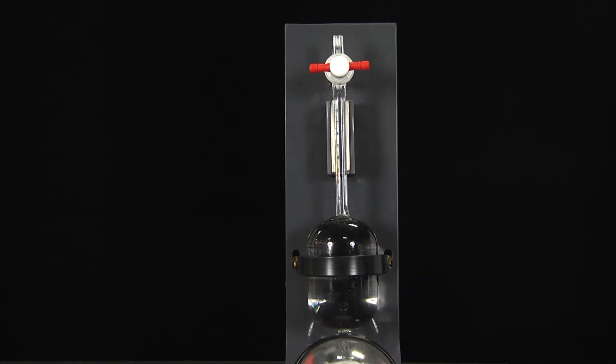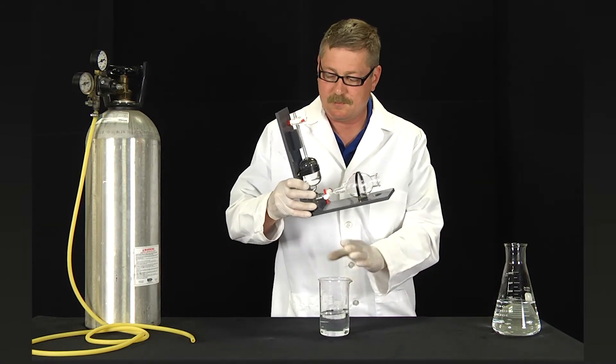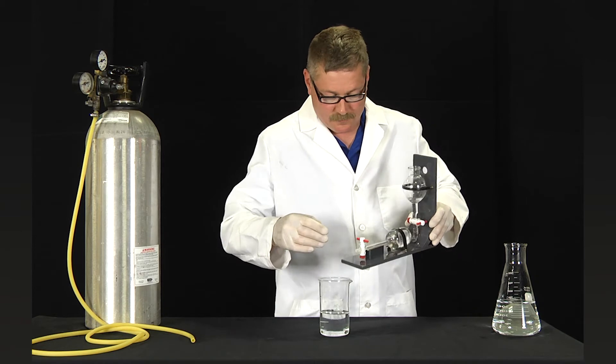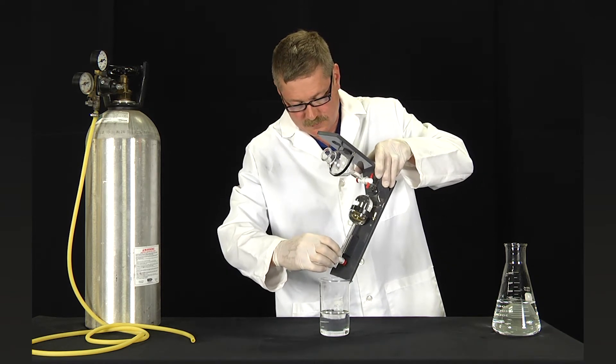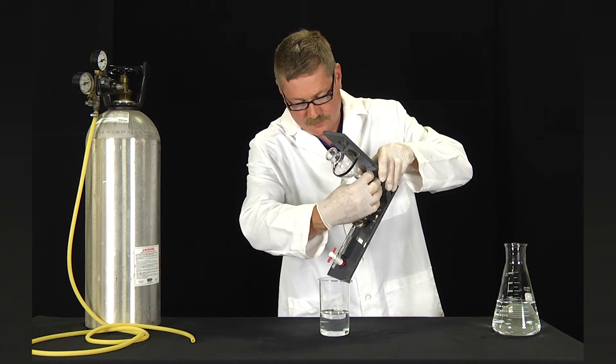There are four other types of absorption burettes also available. After the test is completed, empty the caustic solution from the purity tester. Place the purity tester over a container and open both cocks to allow the caustic to drain out.